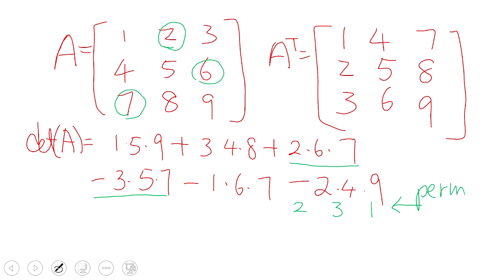This permutation is positive. We define whether a permutation is positive or negative based on the number of inversions. To compute the number of inversions, you write down 1, 2, 3 and draw the crossing lines. You count the intersections — if the count is even, that's a positive permutation.